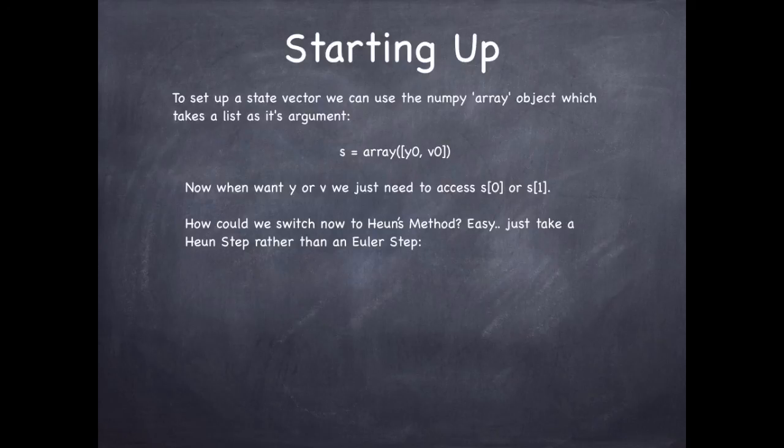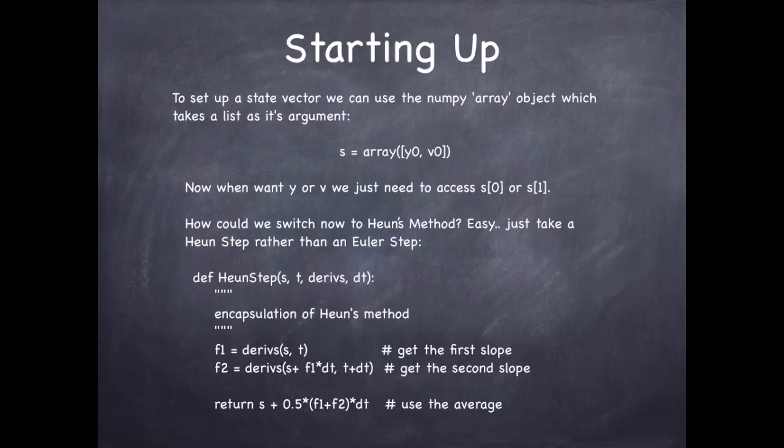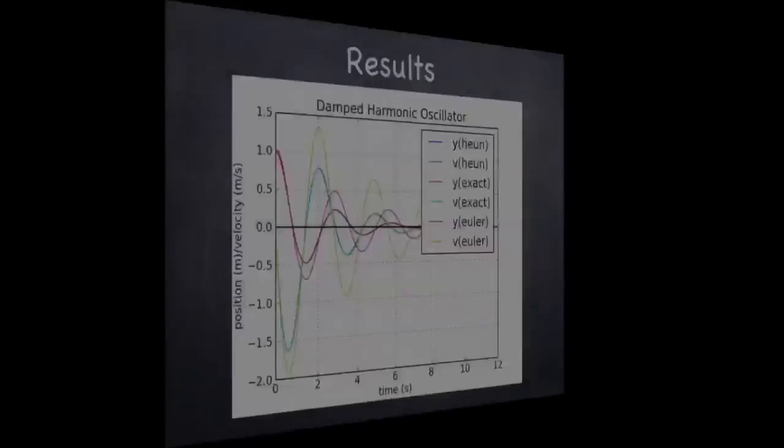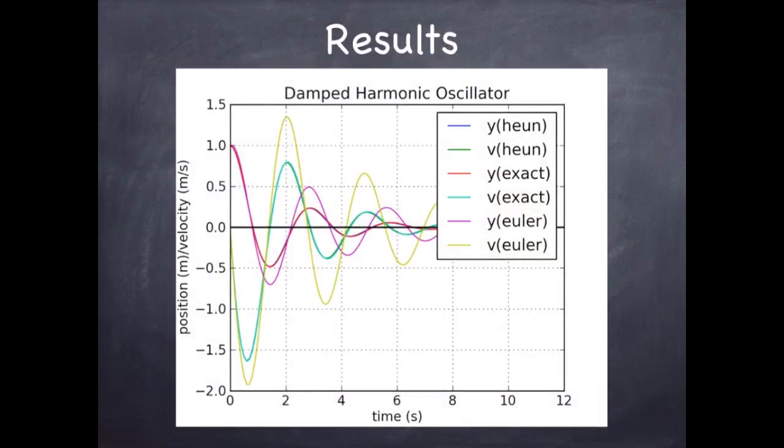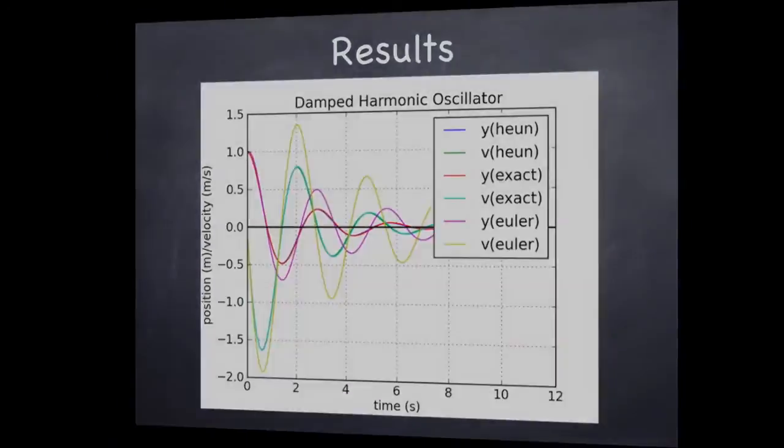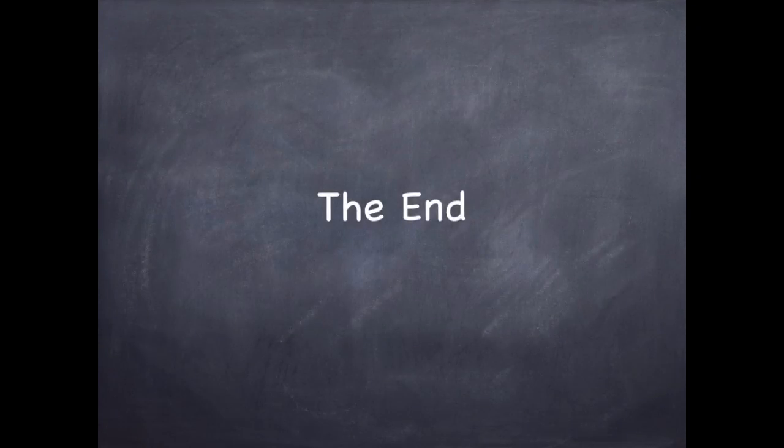Now, what if we want to switch to use Heun's method instead of the Euler method? Well, it's quite easy. We simply use the Heun step function rather than the Euler step function. But because we're using s as an array object, we don't actually have to change the code at all. This is exactly the same code we used when s was a scalar. And if you look at the results, you can see that the exact solution and the Heun calculation are almost identical in this picture for the simple harmonic oscillator. But the Euler method with the same time step is pretty wildly different. So the Heun method is well worthwhile. If you have a definite time step you need to use and you don't want the thing to take very long, you can improve your results using the second order method. It's pretty easy to understand. And that's the end. So we'll see you guys next time.